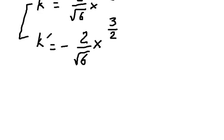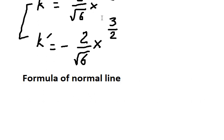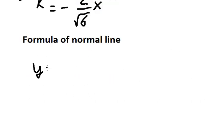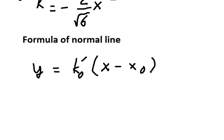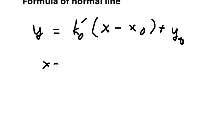Now the formula of the normal should be like this. We know that the curve goes through the origin, meaning X equals 0 and Y equals 0. So we substitute 0 for both values here.